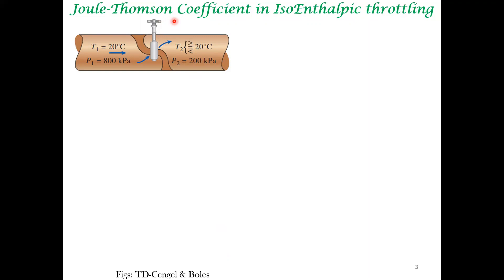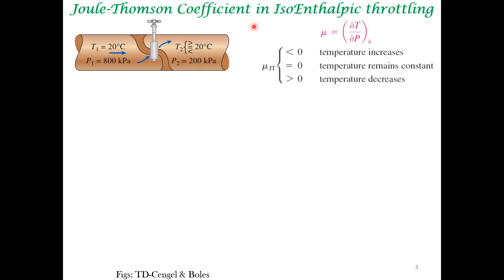We have already seen what is throttling. Throttling is an iso-enthalpic process. When you throttle across a valve or a porous plug, what is kept constant is enthalpy. Even though enthalpy is constant, other things like temperature and pressure can change. Interestingly, pressure always decreases when you throttle. In contrast, the temperature can decrease, remain constant, or may even increase. This change in temperature with respect to pressure is defined as the Joule-Thomson coefficient, which can be positive or negative, and this happens only for a non-ideal, real system.